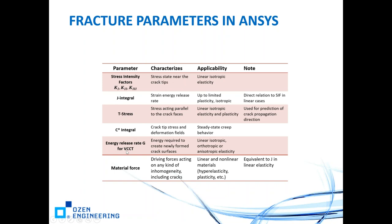Energy release rate G is used for VCCT — applicable for linear isotropic but also orthotropic and anisotropic elasticity, unlike J integral and stress intensity factors which are for isotropic only. Material force is for linear and nonlinear materials like hyperelasticity and plasticity — important for highly nonlinear materials. If you are concerned with crack growth in highly nonlinear materials, look at the material force output from ANSYS.